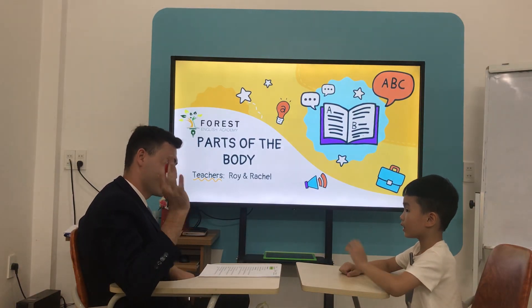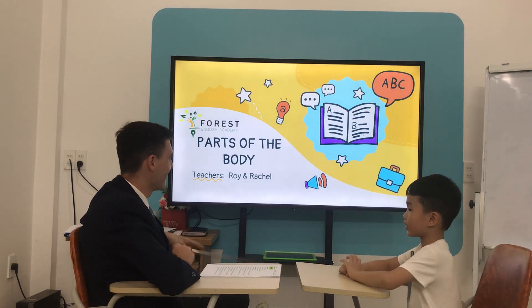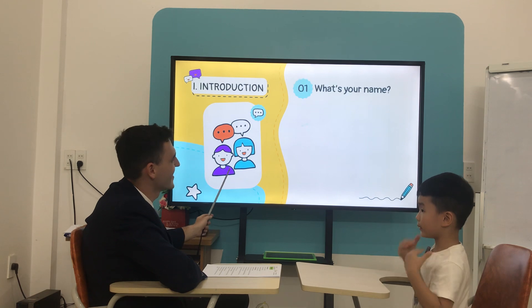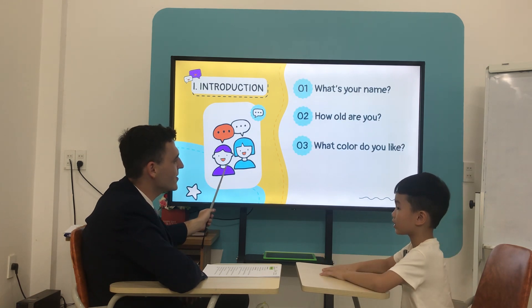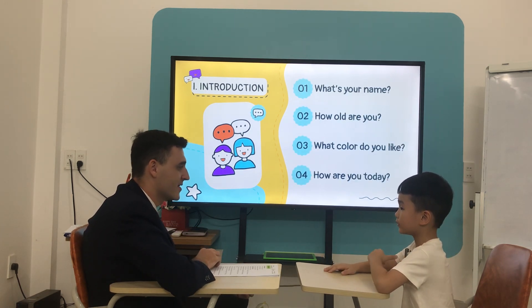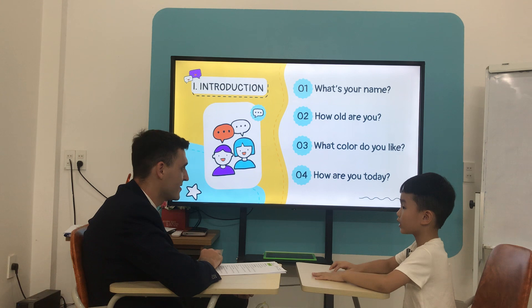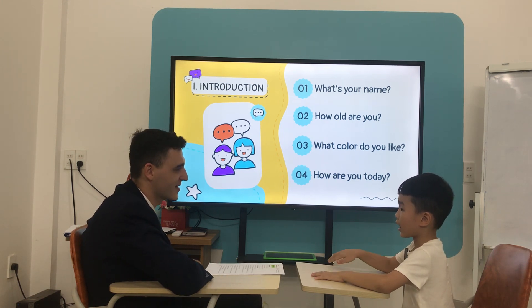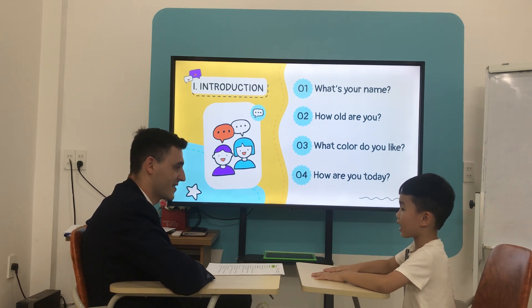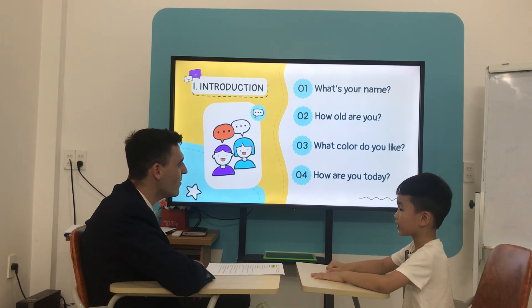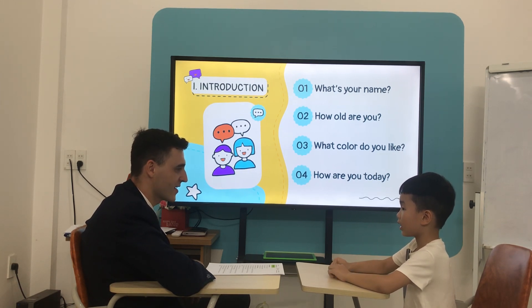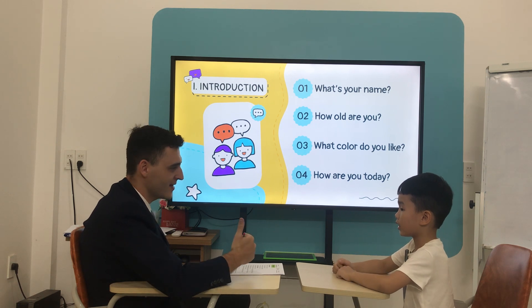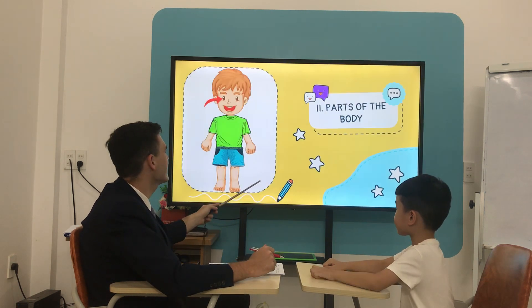Hello. Hello, teacher Roy. What's your name? My name is Ben. How old are you? I'm 6. What color do you like? I like green. And how are you today? I'm 10. Are you ready, Ben? Yes. That's good.